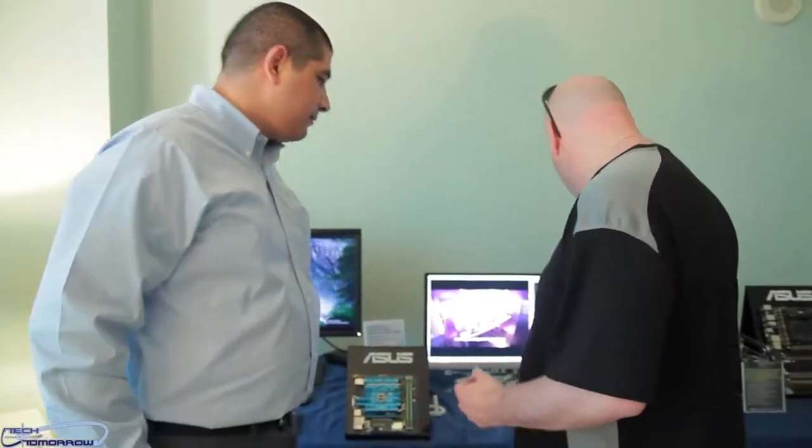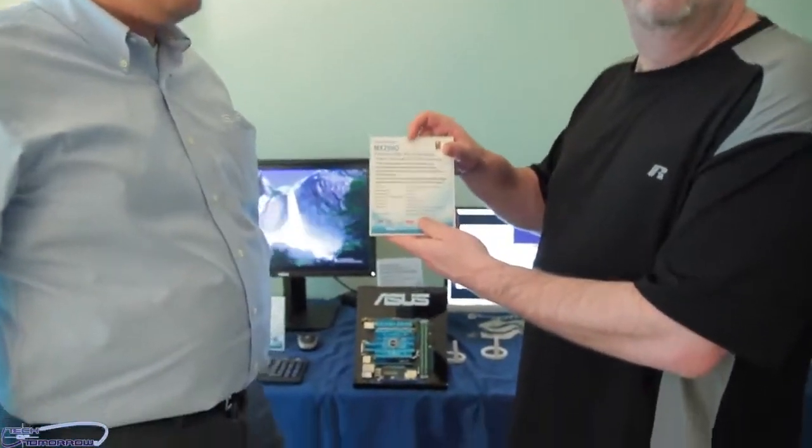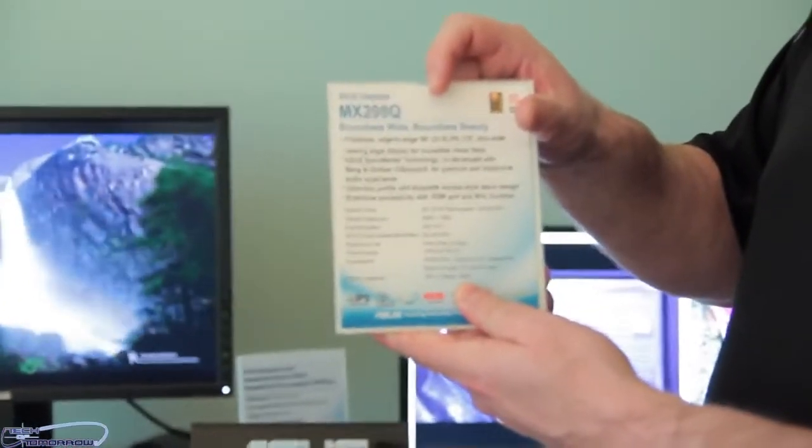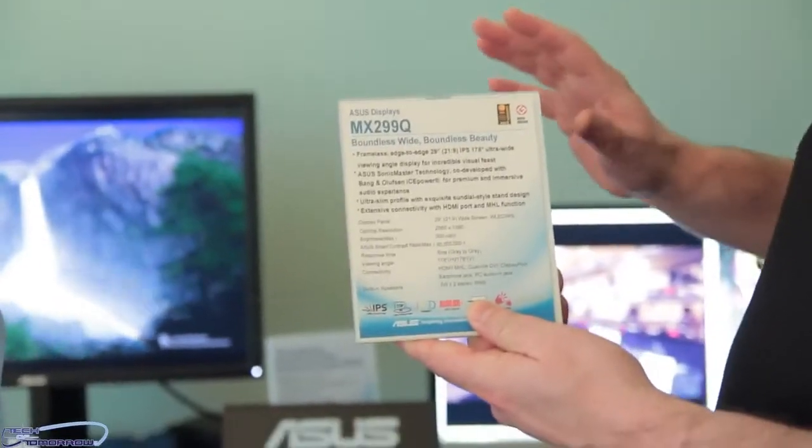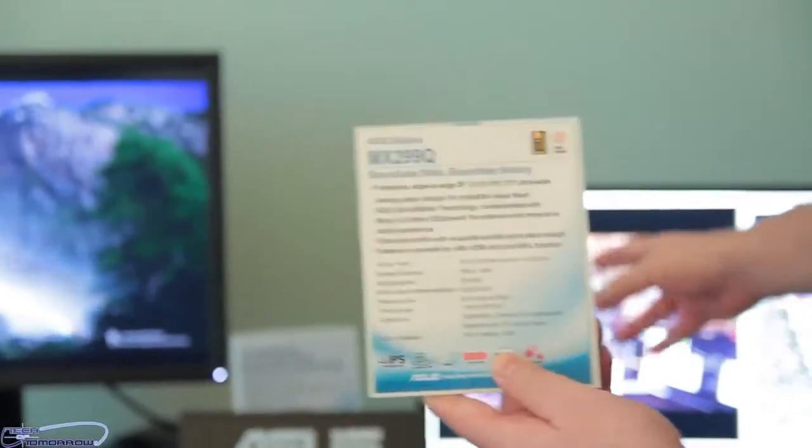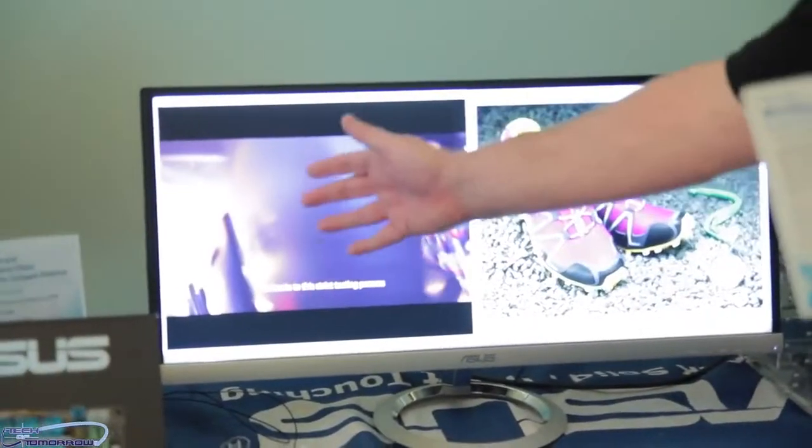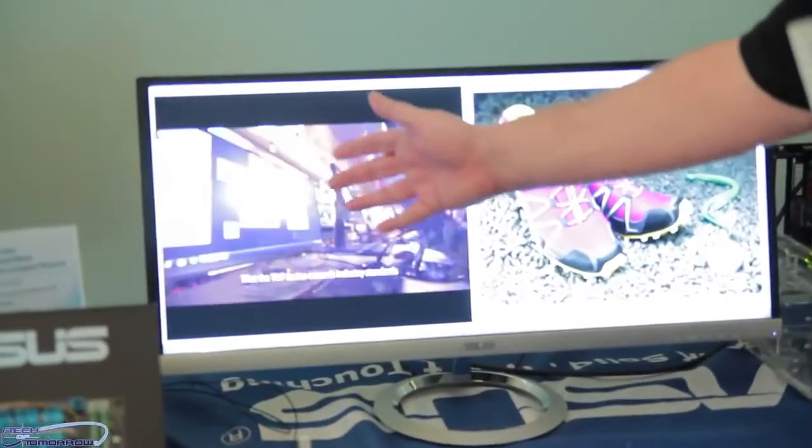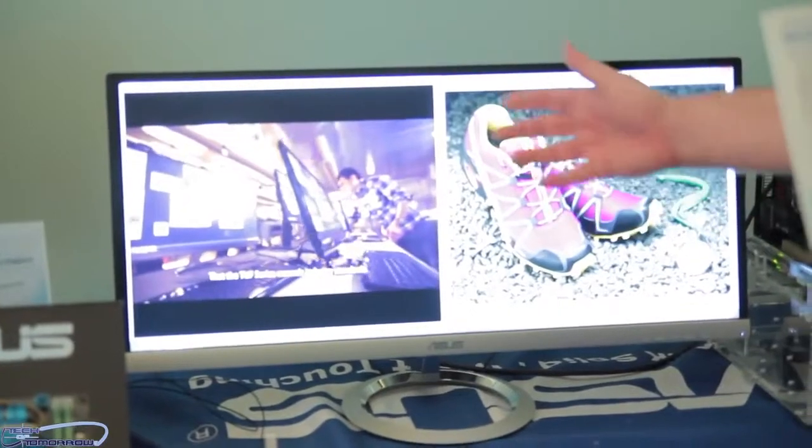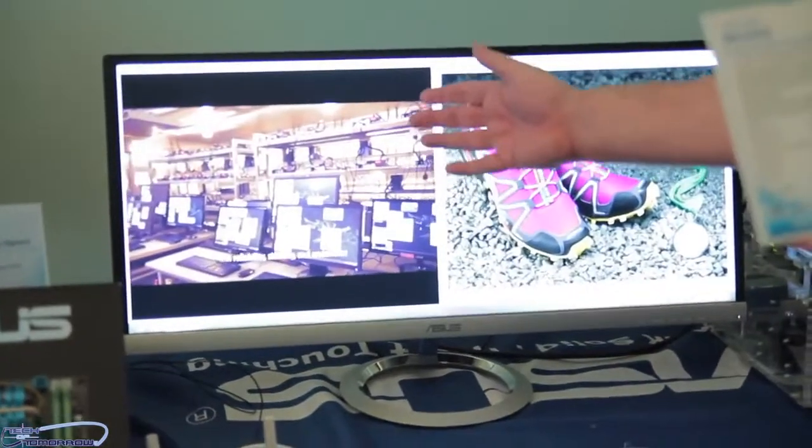So JJ, this model number back here, this one right here, this is the MX299Q. And this thing has all kinds of stuff which we're now going to get into. You guys can see back here behind me, you've got two full screens being fully shown on this monitor. I believe the resolution is 2560 by 1080.